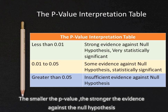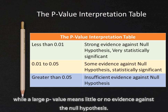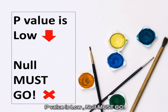The smaller the p-value, the stronger the evidence against the null hypothesis, while a large p-value means little or no evidence against the null hypothesis. A helpful mnemonic: p-value is low, null must go.